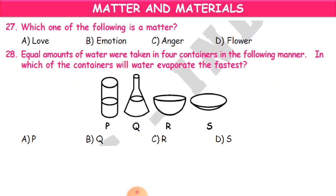Question 27: Which one of the following is a matter? You have been given four options. You have to identify which one is the matter. Matter is something which is made up of molecules — tiny particles — which occupies some space and which has some weight. From the four options, which one has that?